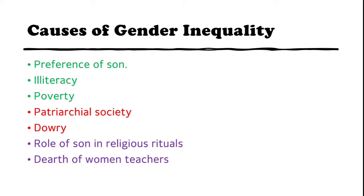Now we will talk about gender inequality and its causes. First is the preference of the son — some families give preference to the son but not to the daughter. Second is illiteracy and poverty. Third is the patriarchal society, which is a society where men get preference compared to women.